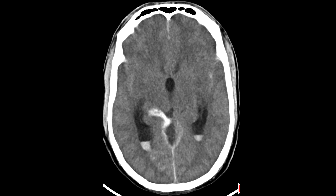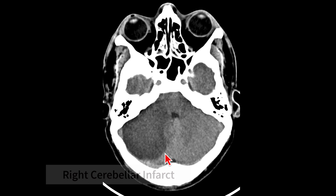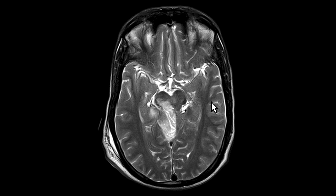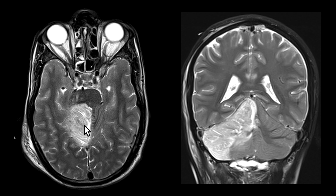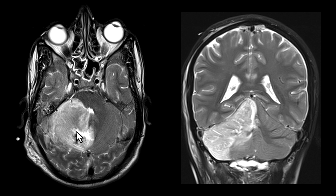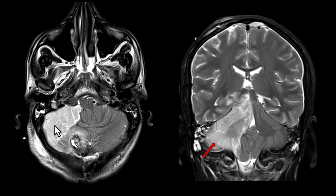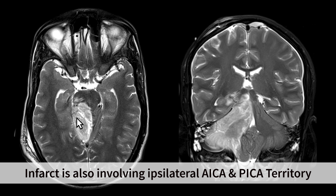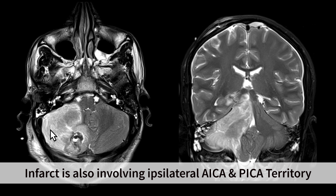CT scan performed the next day showed a large infarct involving the right cerebellar hemisphere. The infarct is quite extensive on MRI, involving the superior vermis, tentorial surface of the right cerebellar hemisphere, and also the anterior inferior and posterior inferior surface of the right cerebellar hemisphere. This infarct is involving the right-side AICA and PICA territory.